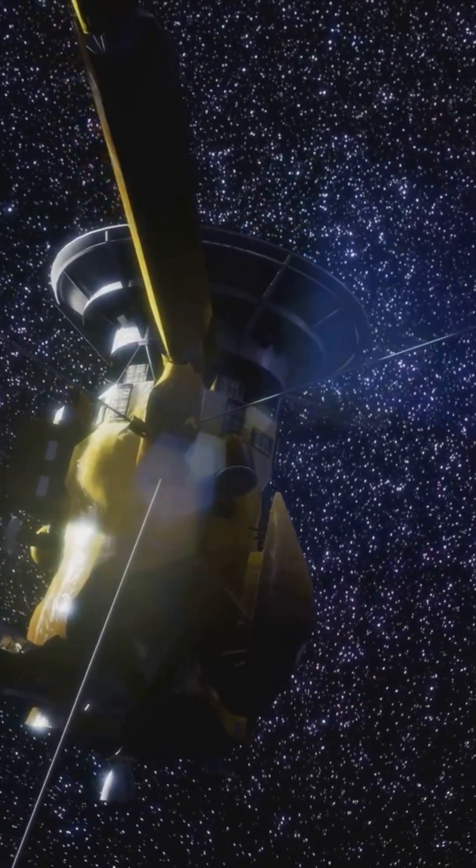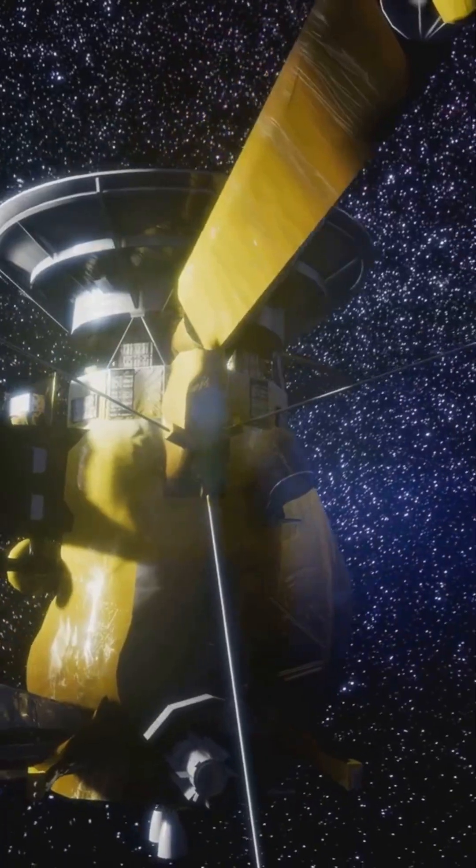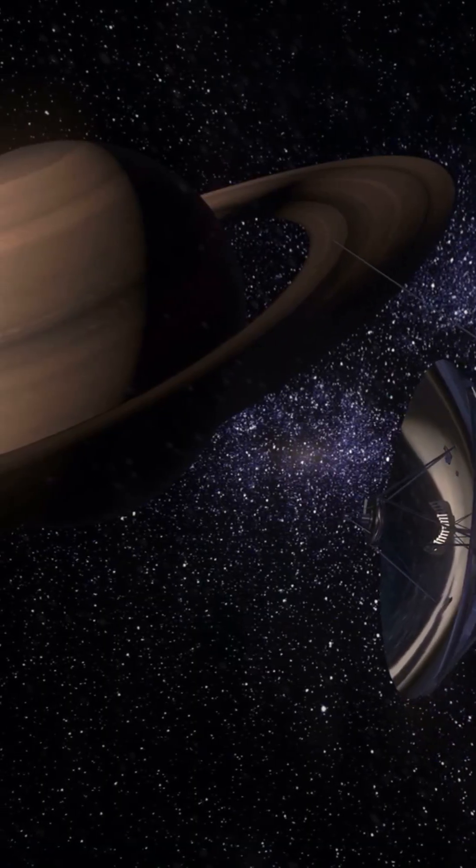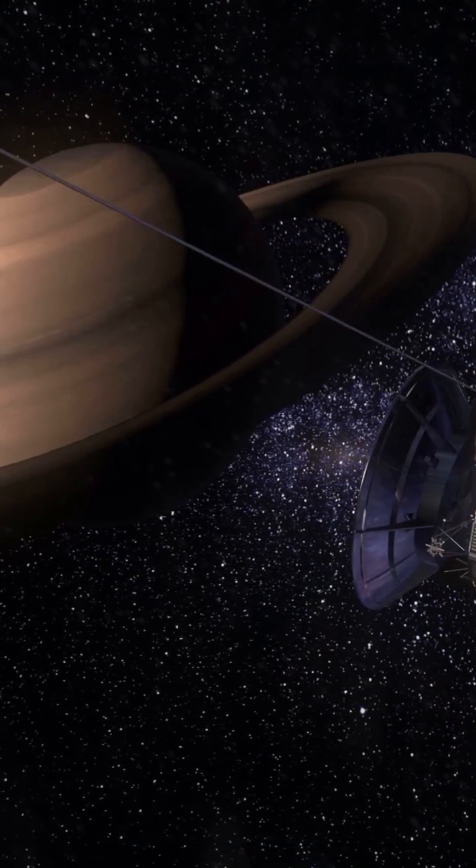This comet had a close encounter with Saturn in 2022, altering its path dramatically. This rare gravitational slingshot has only been seen once before with Jupiter and Comet C1980E1.